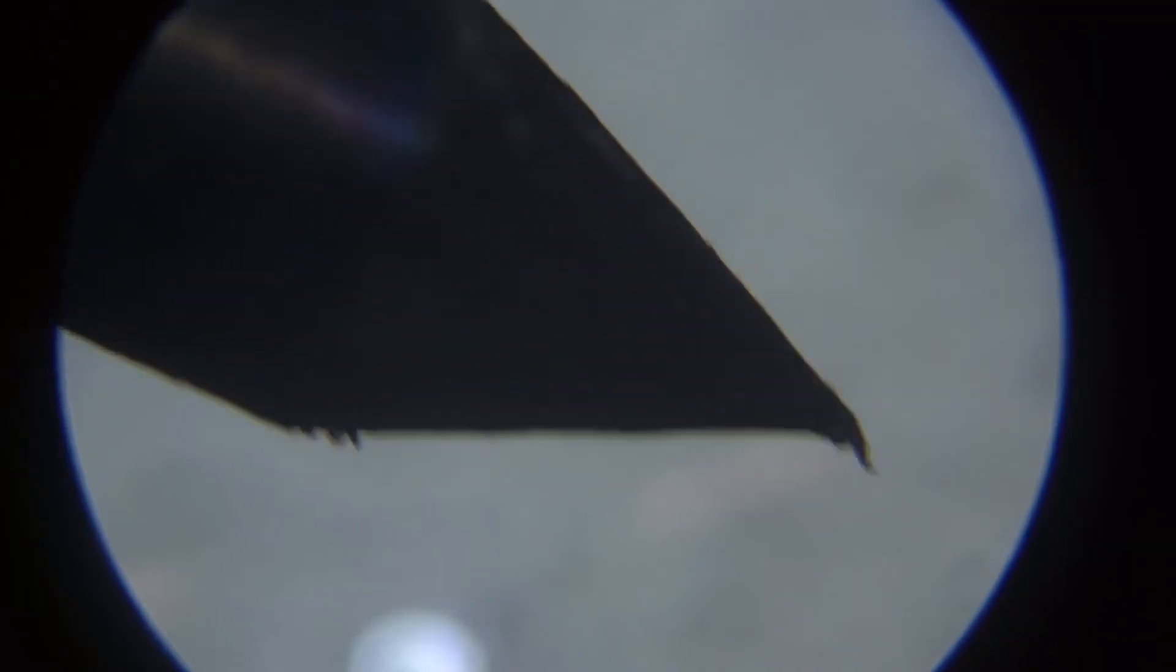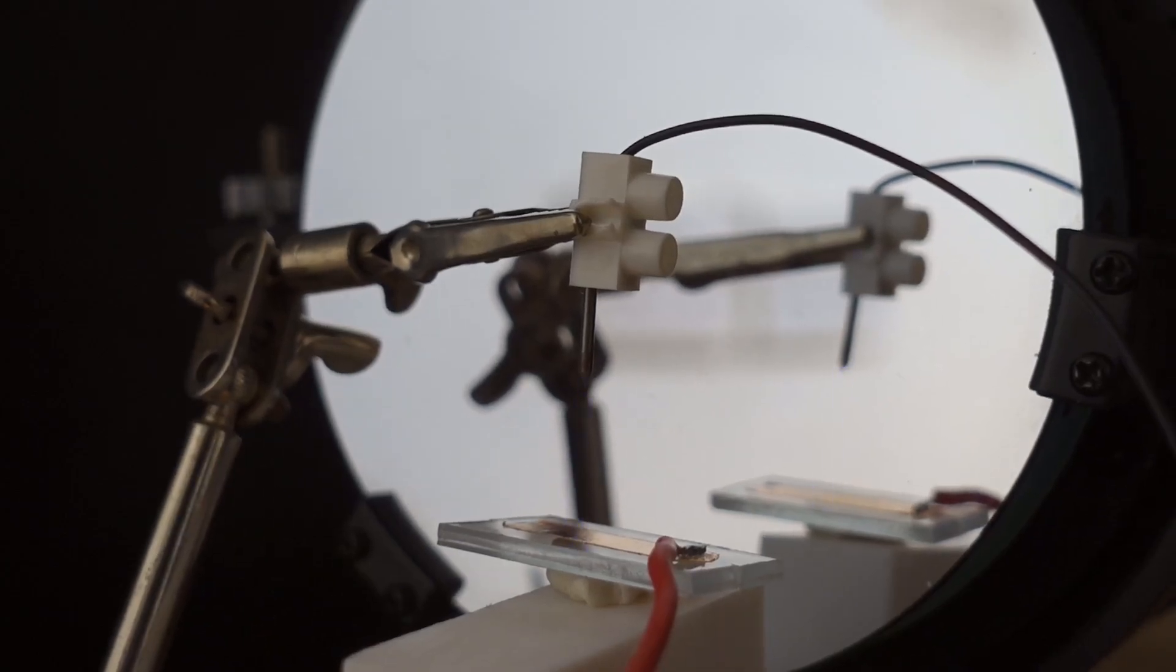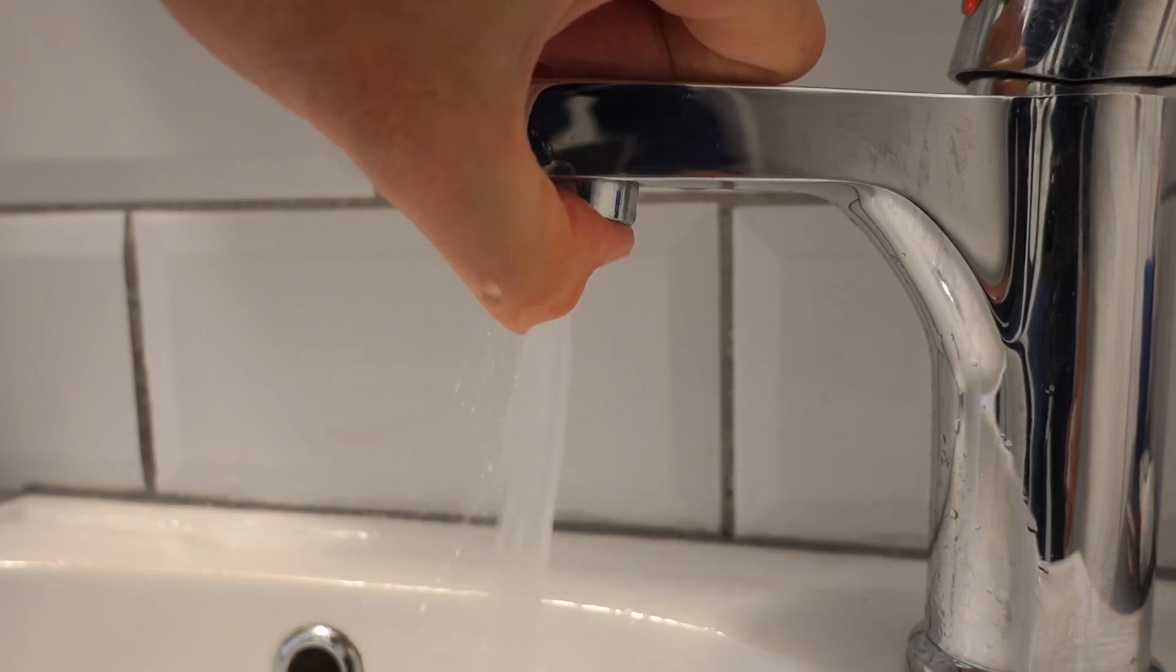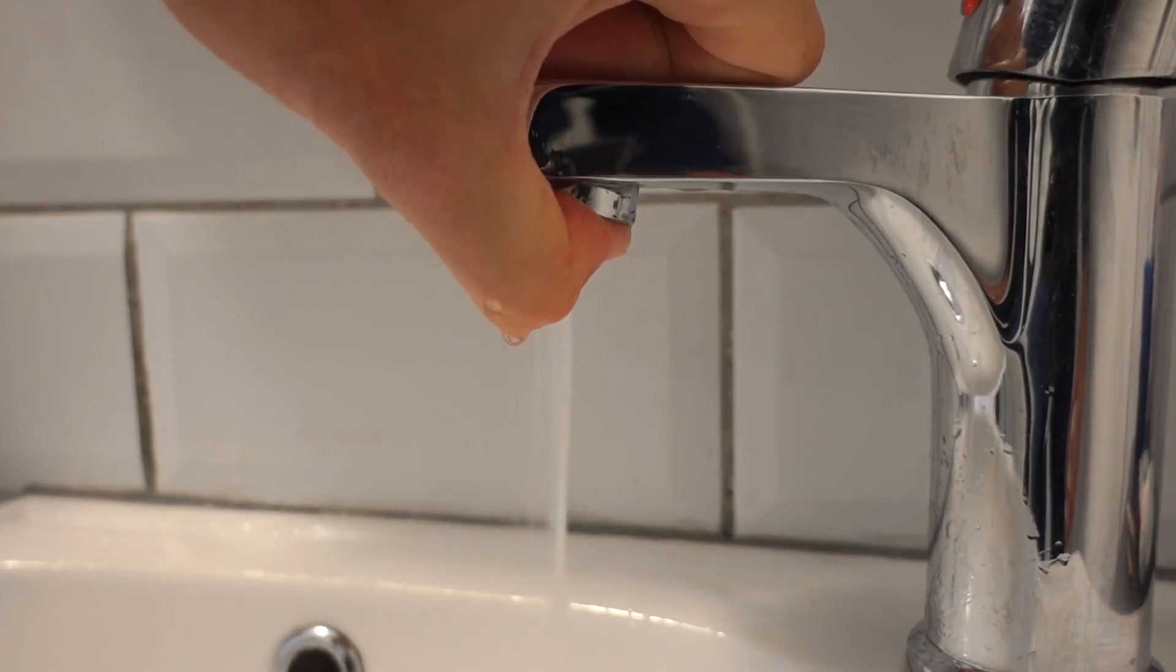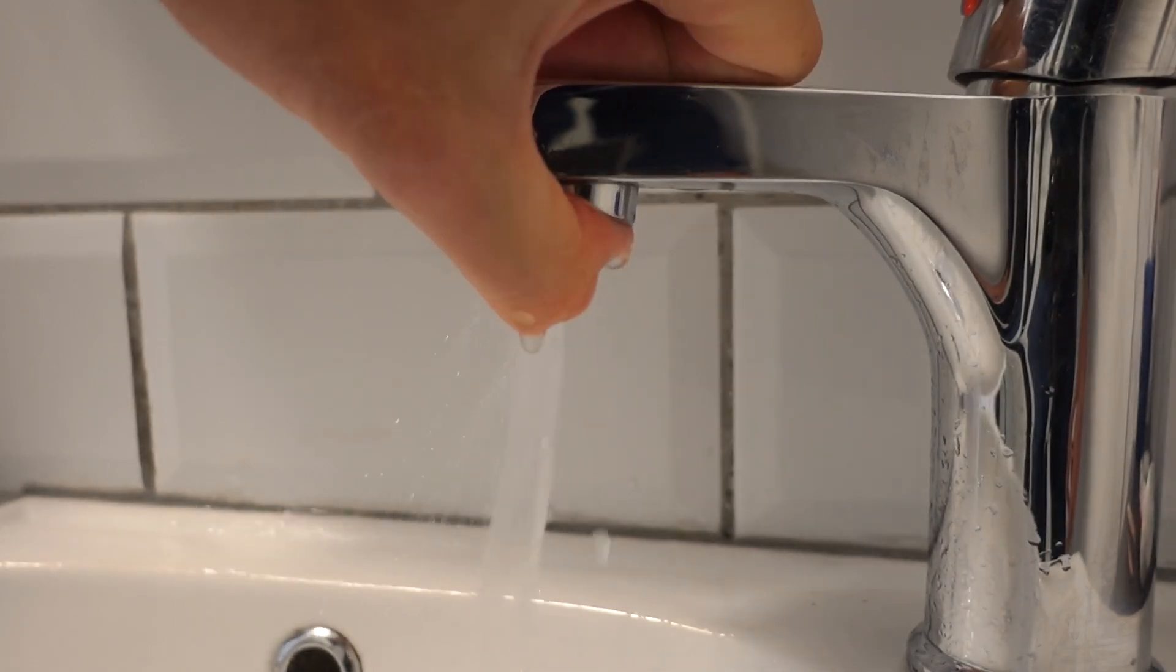For the electrodes, you're going to need sharp points. The sharper the better. This increases the electric field, making it easier to break down the air and generate more propulsion. Think of it a bit like putting your finger over a tap - the water speed increases as the hole size gets smaller.